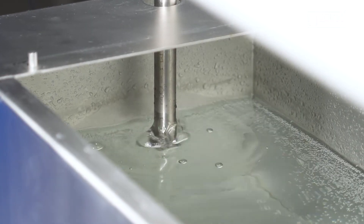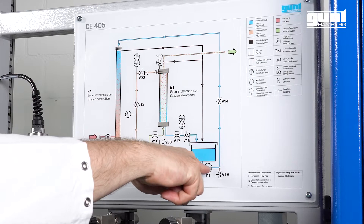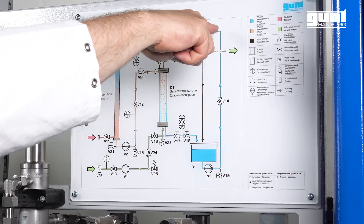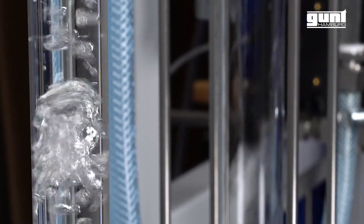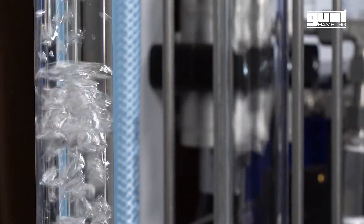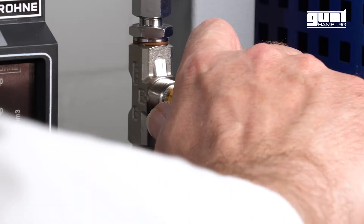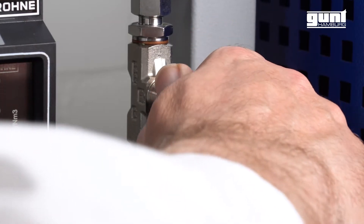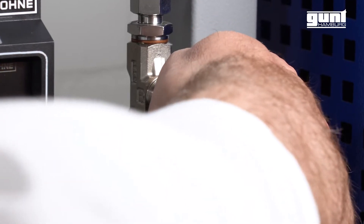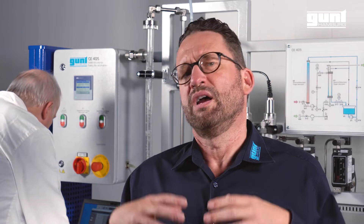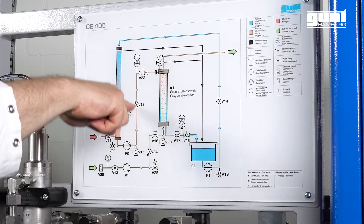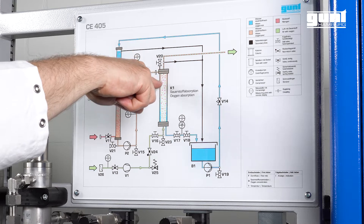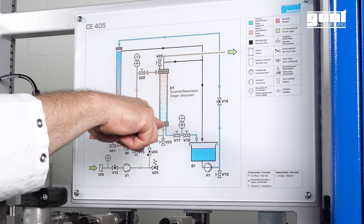The high oxygen content water is collected and transferred to the stripping column. The stripping — that is the desorption of oxygen — is done with nitrogen. In a continuous process cycle, low oxygen content water is taken out of the bottom of the stripping column and pumped back into the falling film column.